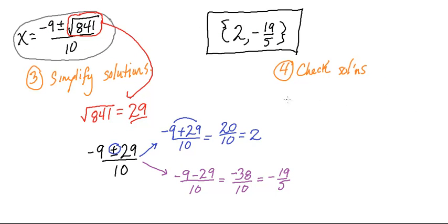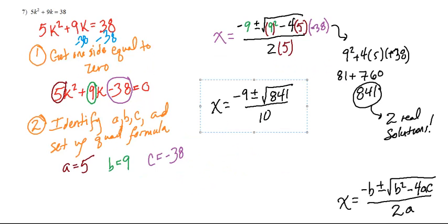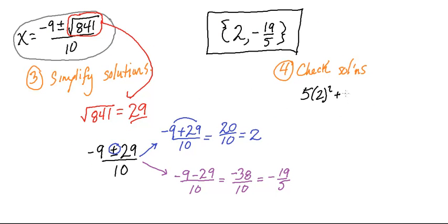Checking your work, I'll let you do that on your own. But you're just going to evaluate 5 times 2 squared plus 9K. That actually works. So 2 is a solution. And 5 times negative 19 fifths squared plus 9 times negative 19 fifths. It does, in fact, equal 38. Which is a little crazy. You wouldn't think. But it totally does.